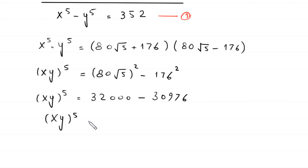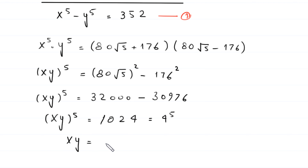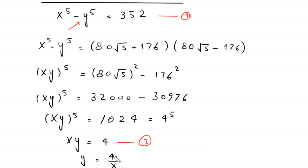This gives (x·y)⁵ equals 32000 minus 30976, which equals 1024. And 1024 is the same as 4 to the power 5. Taking a fifth root on both sides gives x times y equals 4. Let's call this equation number 2. From this equation we get y equals 4 over x.